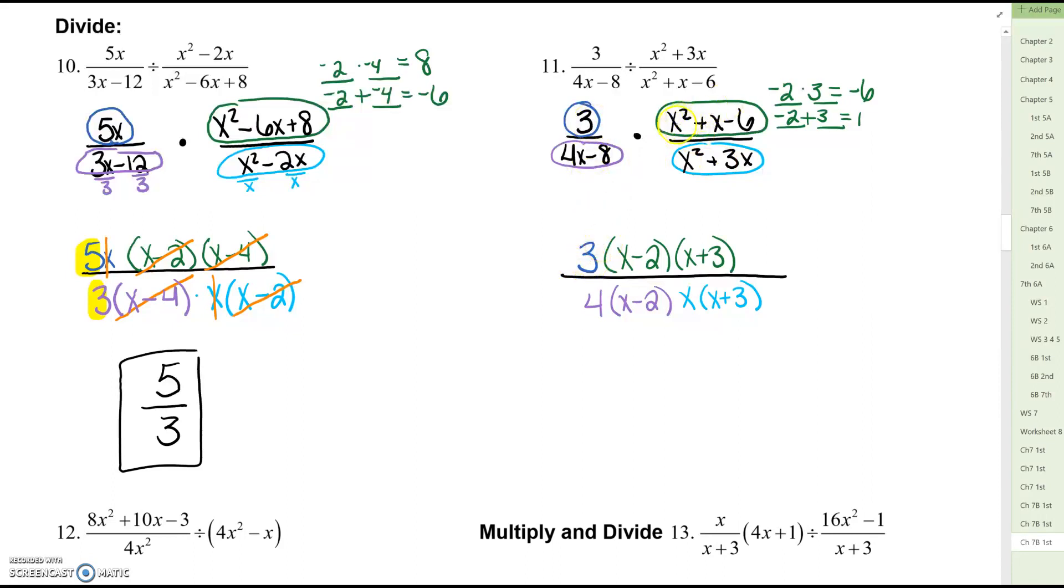So 3 doesn't need to be factored. x squared plus x minus 6. That's a trinomial. Get that factored. 4x minus 8 and x squared plus 3x. Those are both greatest common factor factoring. So what do they have in common? Pull that outside the parentheses. Once you get everything factored. x minus 2 cancels. x plus 3 cancels. So we are left with 3 over 4x.